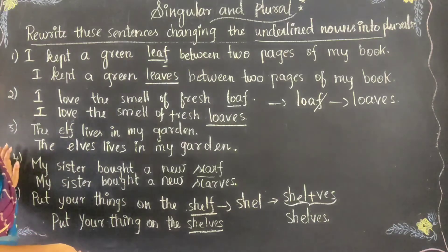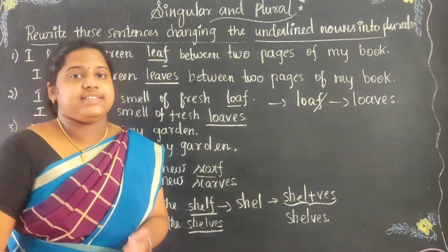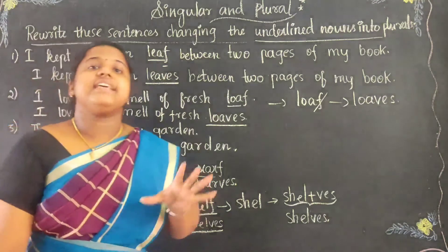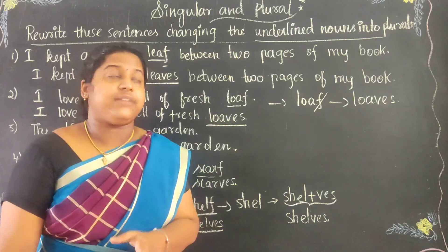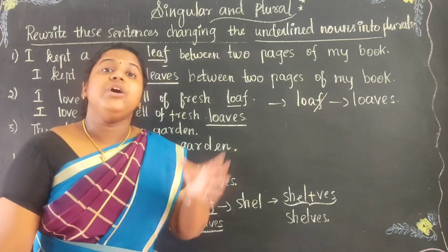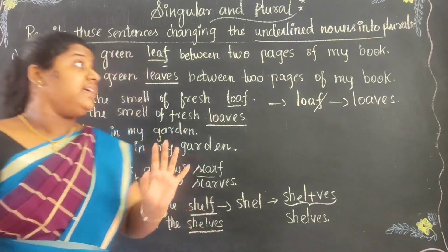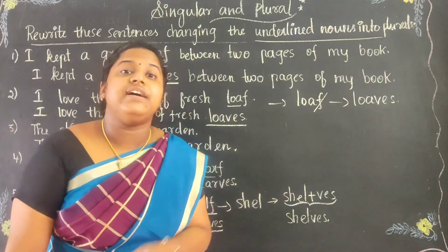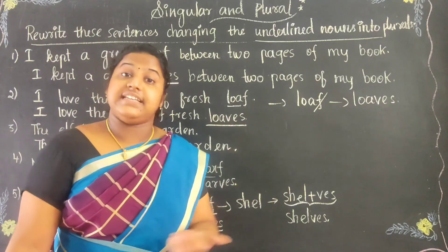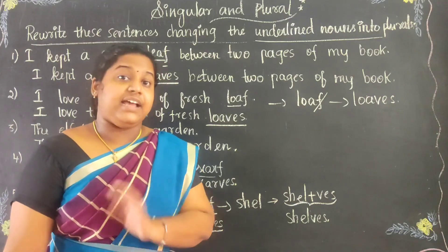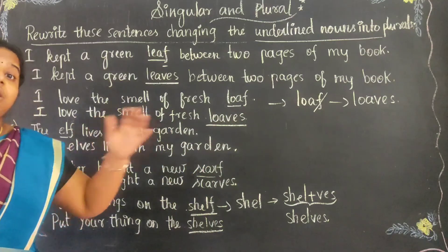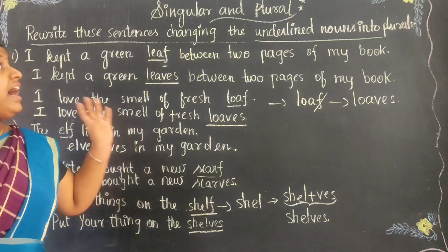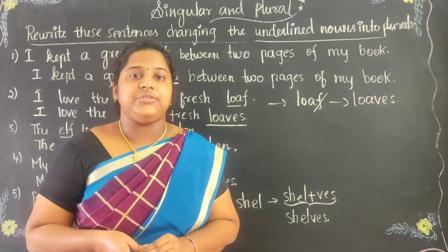So friends, I hope you have understood all these sentences. Now let us recall what we learned today. We learned about singular nouns and plural nouns. A singular noun tells about one person, one place, one thing. A plural noun tells about two or more people, places or things. We generally add S to make plural. If the word ends with S, CH, SH, X, or O, add E-S. If the word ends with F or F-E, drop the F or F-E and add V-E-S. See you in the next video. Thank you.